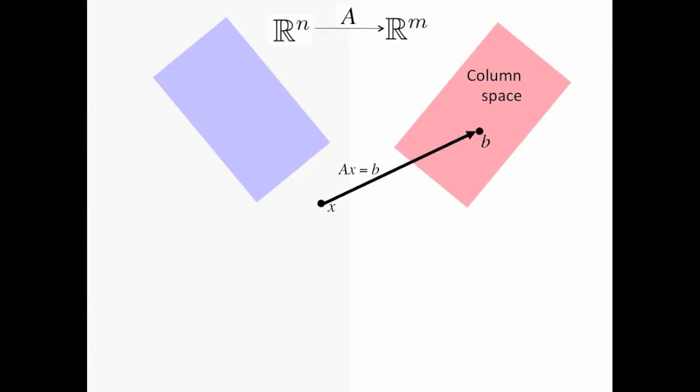We also know there's something called the row space, and the zero vector is in both of these spaces. As a matter of fact, the zero vector is in every subspace. In particular, it's also in the null space. Notice that the null space is a subspace of R^n.